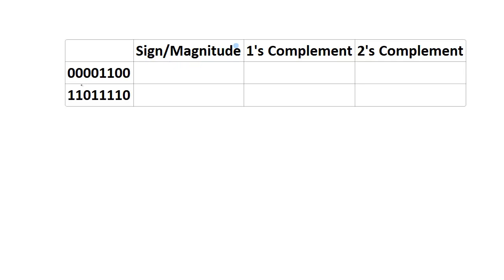Now let's look at examples with all three binary number systems, converting binary values back into their decimal equivalents under each system. It's an 8-bit system — the first column assumes sign-magnitude, the second column assumes 1's complement, and the third assumes 2's complement. The number 00001100 has a 0 as the most significant bit, so it's positive in all three systems. The value of 1100 is 12, so 00001100 equals 12 regardless of which number system you're using.